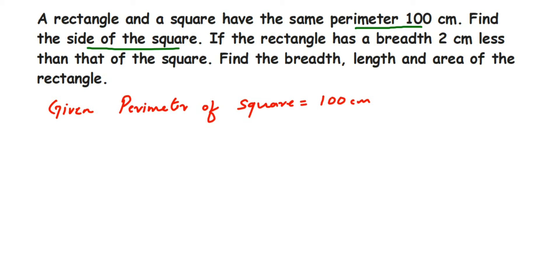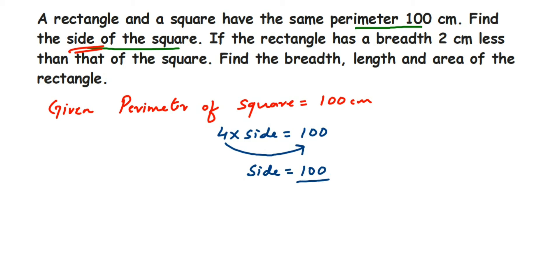Perimeter of rectangle is also 100 centimeters. Now we have to find the side of the square. The perimeter of a square is four times the side, so: 4 × side = 100. I have to find the side, so I'm going to transpose 4 to the other side. Since 4 is in multiplication, it comes to division on the other side: side = 100 divided by 4.